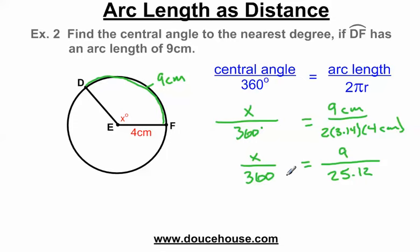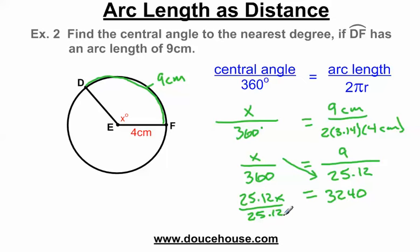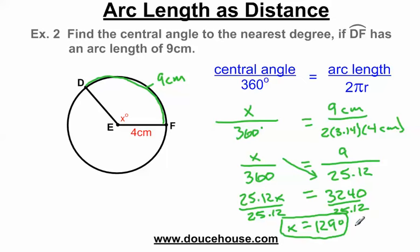Simplifying the denominator: 2 times 3.14 times 4 gives me 25.12. So x over 360 equals 9 over 25.12. Cross multiplying: 25.12x equals 9 times 360, which is 3,240. Dividing by 25.12 gives x equals approximately 128.98, which rounds to 129 degrees. So the central angle is 129 degrees.